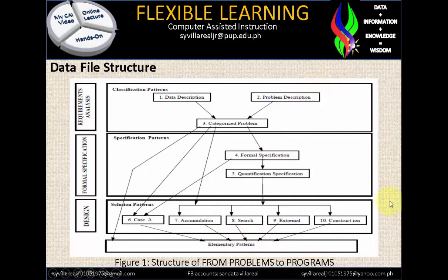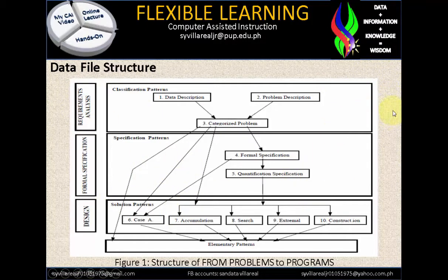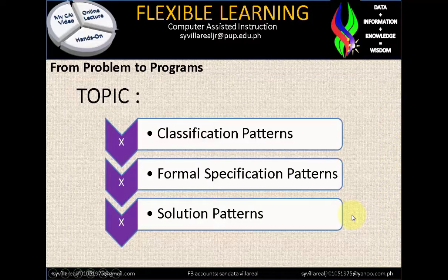This framework identifies how we need to solve problems in any way, for any kind of problems. It could be subdivided so that you can identify the best possible solution, then implement it. Our topic for today, from problems to programs, covers the classification patterns, formal specification patterns, and solution patterns. So let's move to these topics.